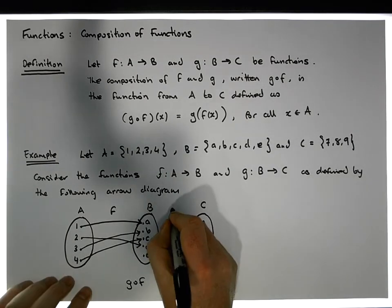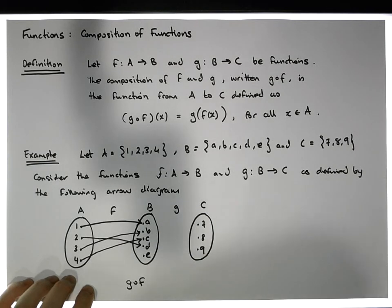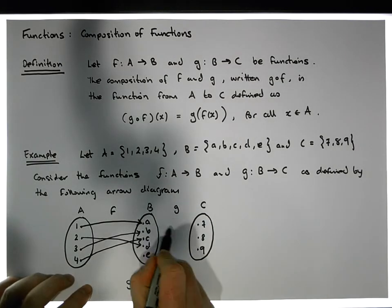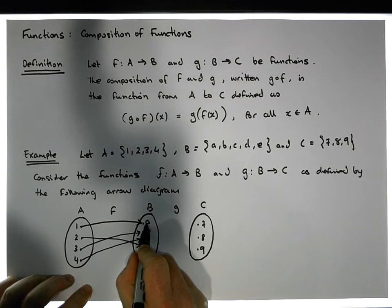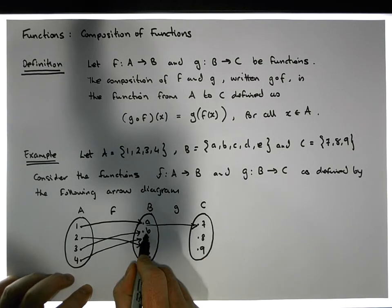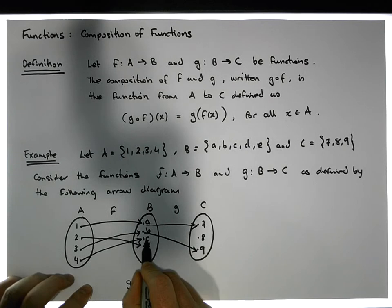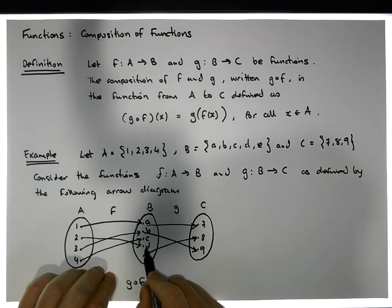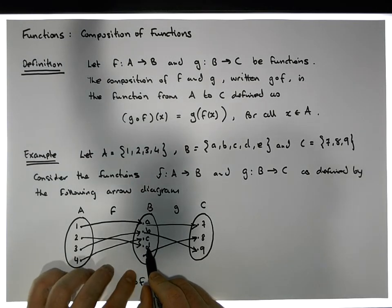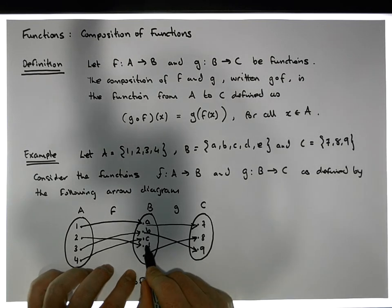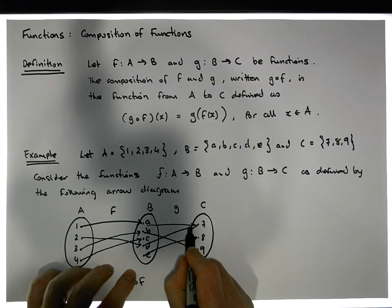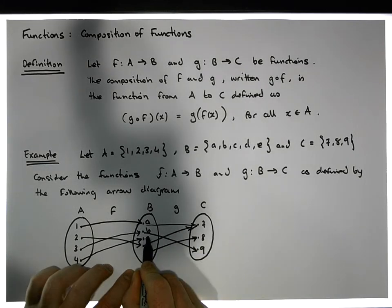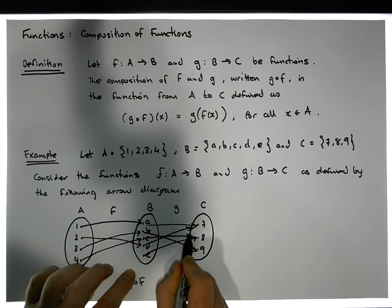What about the function g? Let's say g is defined to be: a goes to seven, b goes to nine, e goes to eight, nine goes to seven as well, and c goes to eight.